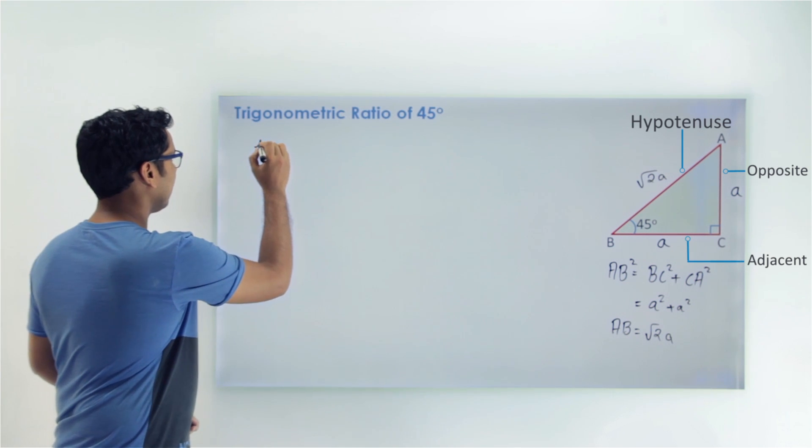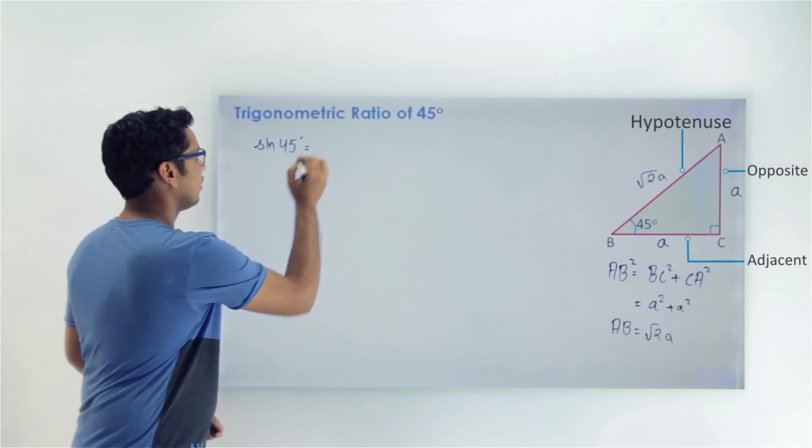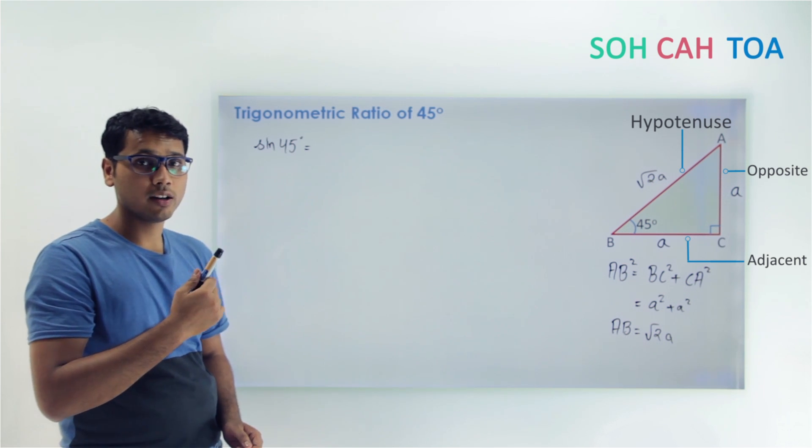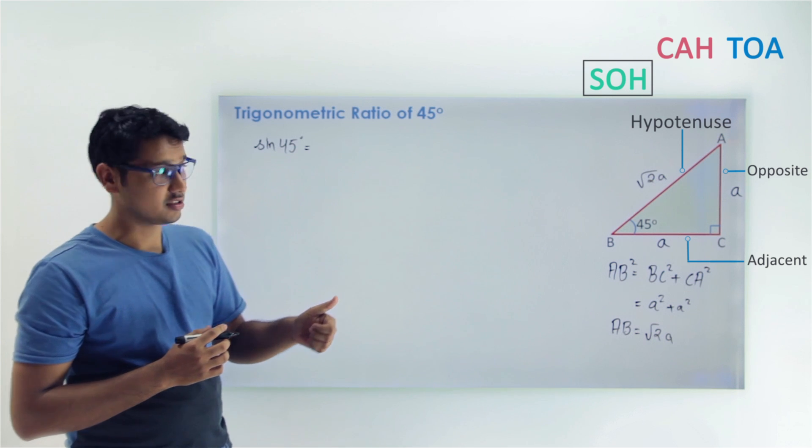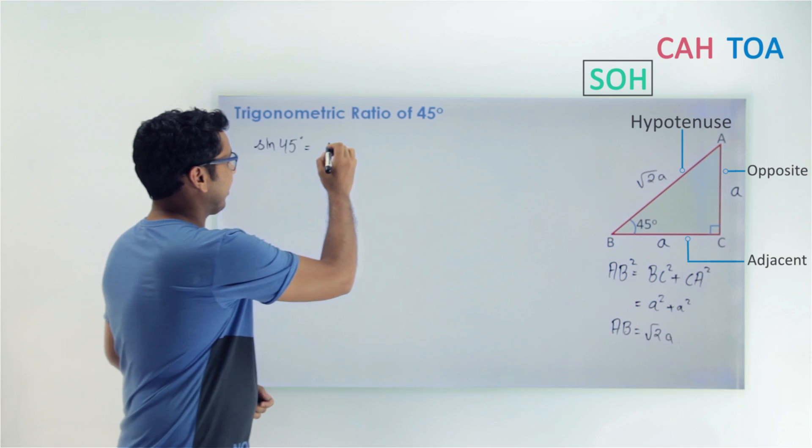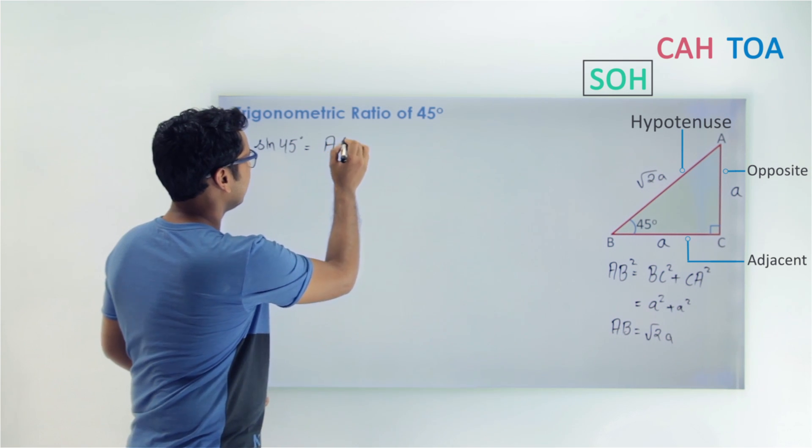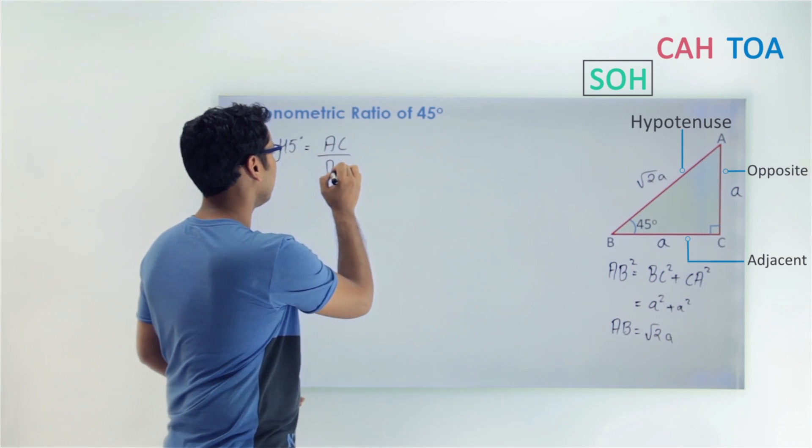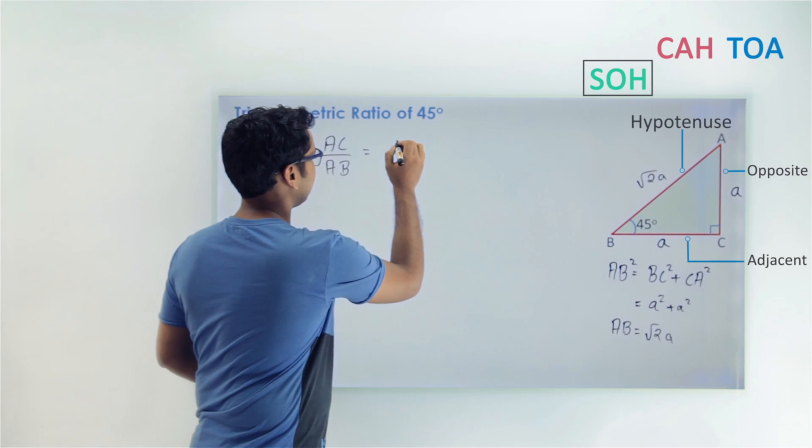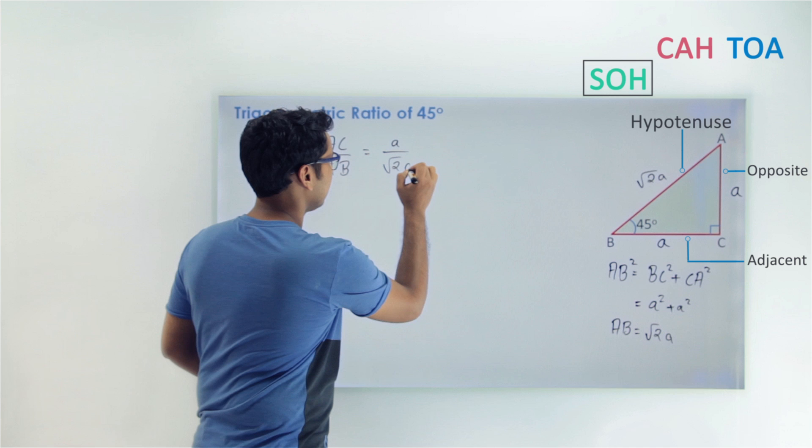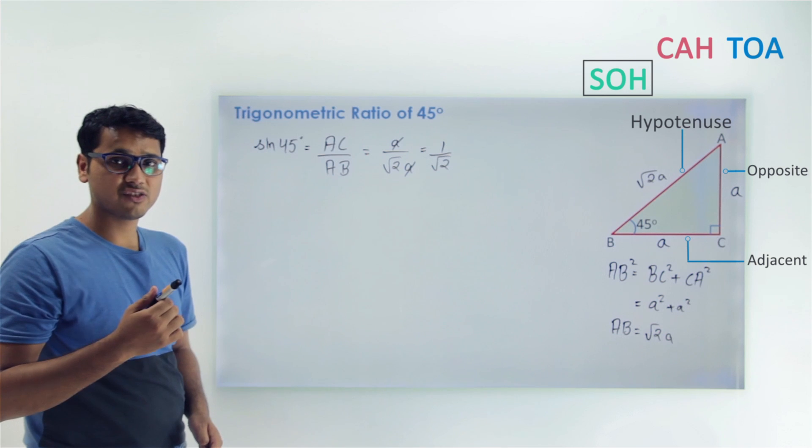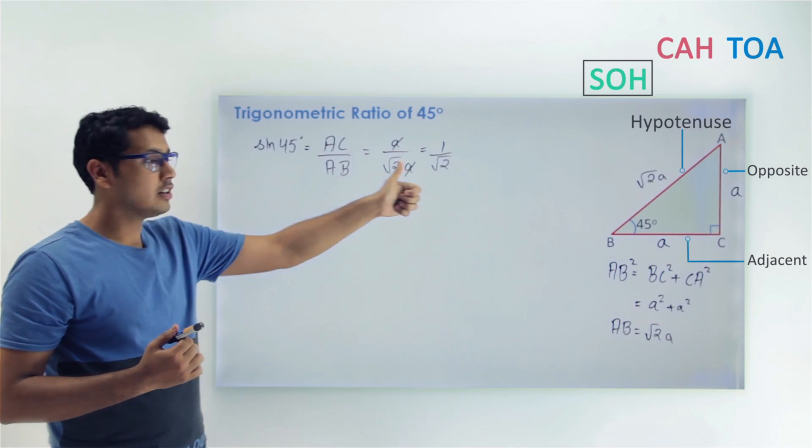First value will be sin 45 degrees. Now can you tell me what sin 45 will be? Remember SOH CAH TOA. SOH CAH TOA says that sin is opposite upon hypotenuse. So opposite here is AC and hypotenuse here is AB. So sin 45 will be AC upon AB. If you put the values, AC is a and AB is √2a. So this will be a upon √2a. a will get cancelled, and this will remain 1 by √2. Now you can match from the table, the value for sin 45 was 1 by √2.